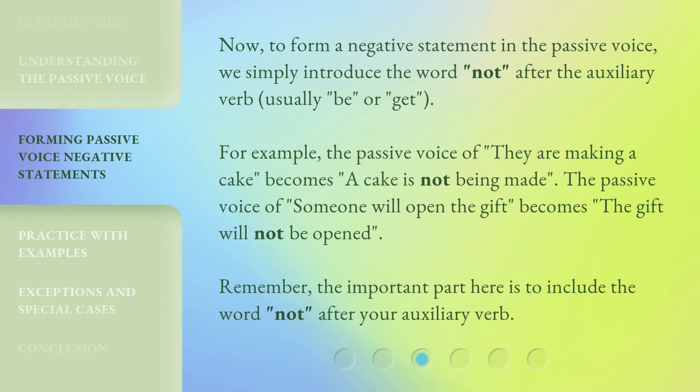Now, to form a negative statement in the passive voice, we simply introduce the word 'not' after the auxiliary verb, usually 'be' or 'get.' For example, the passive voice of 'they are making a cake' becomes 'a cake is not being made.' The passive voice of 'someone will open the gift' becomes 'the gift will not be opened.' Remember, the important part is to include the word 'not' after your auxiliary verb.